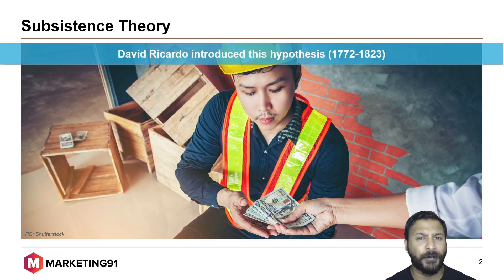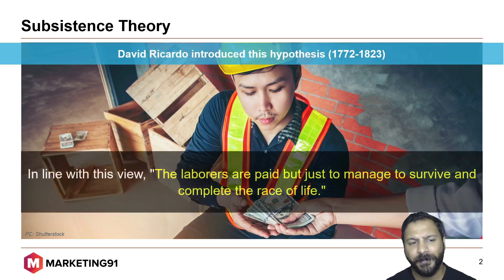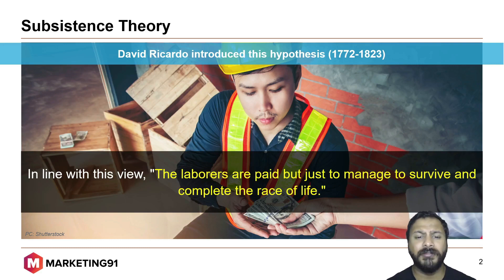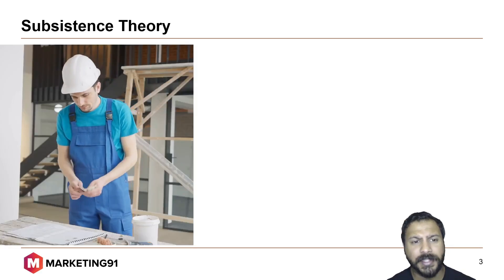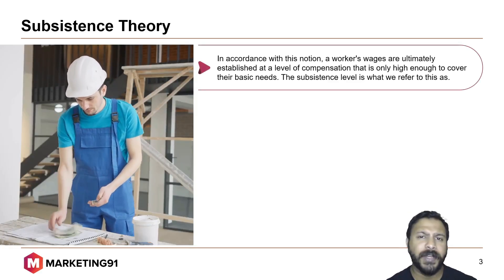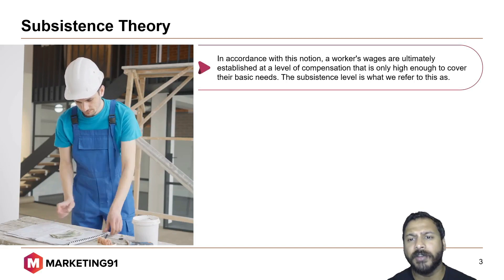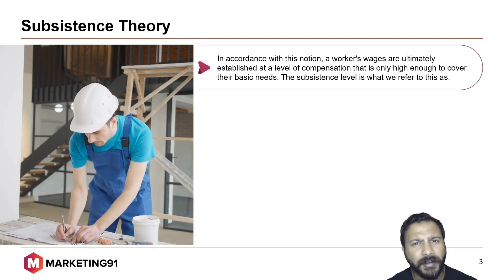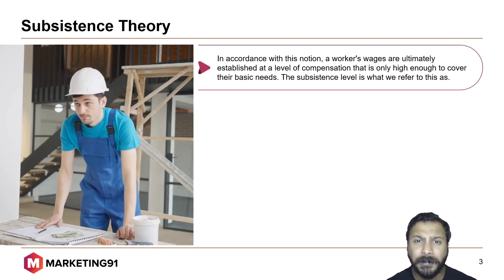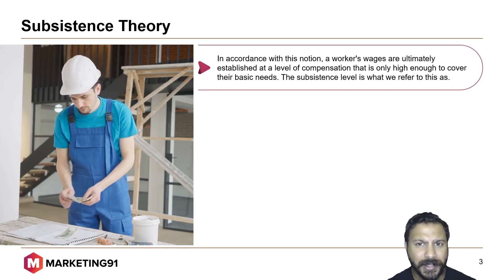David Ricardo introduced this hypothesis. In line with this view, laborers are paid just enough to survive and complete the race of life. In accordance with this notion, a worker's wages are ultimately established at a level of compensation that is only high enough to cover their basic needs. The subsistence level is what we refer to this as.